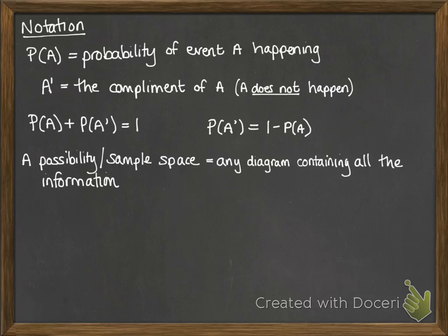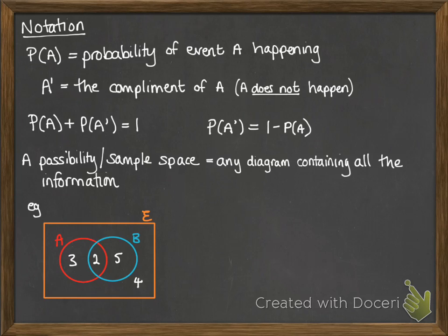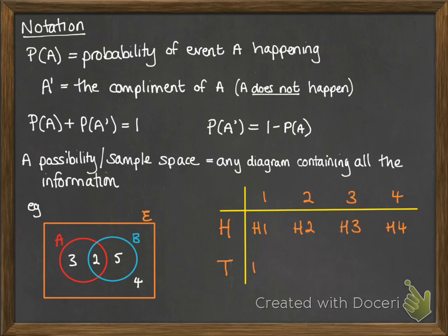A possibility space or sample space is any kind of diagram that contains the information we're talking about. This could be, for example, a Venn diagram, or it could be a two-way table.